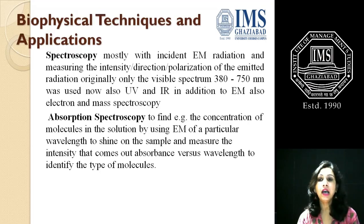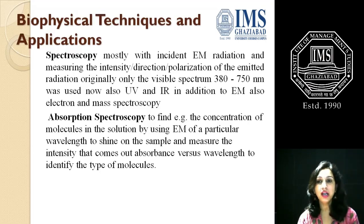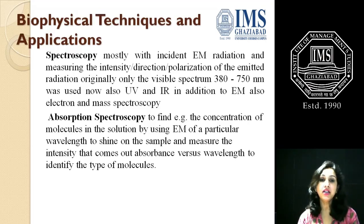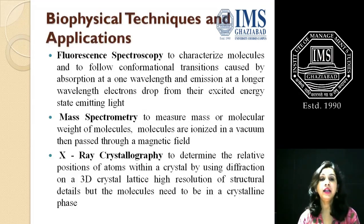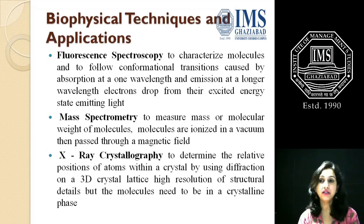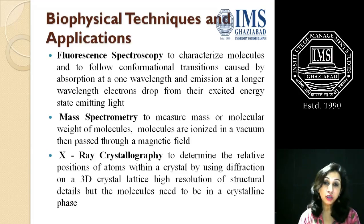Spectroscopy uses electromagnetic radiation, measuring the intensity, direction, and polarization of emitted radiation. Originally applied only under the visible spectrum (380–750 nm), it is now also used with UV and IR radiation. Absorption spectroscopy is used to find out the concentration of molecules in a particular solution. Fluorescence spectroscopy is used to characterize molecules and follow conformational transitions, based on absorption at one wavelength and emission at a longer wavelength. Mass spectroscopy measures the mass or molecular weight of molecules.